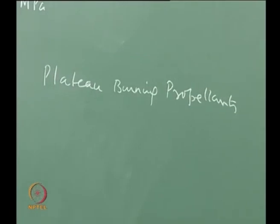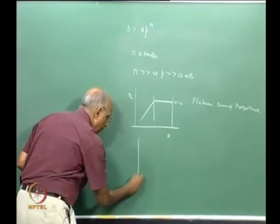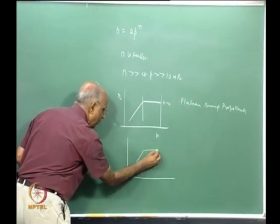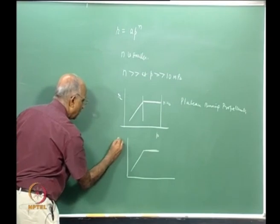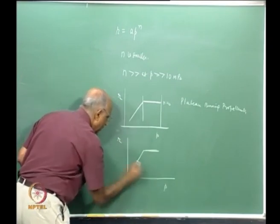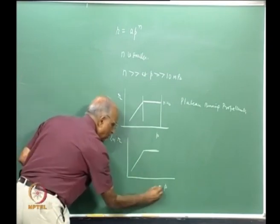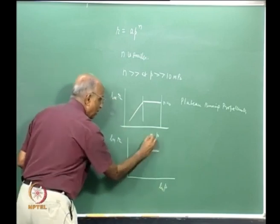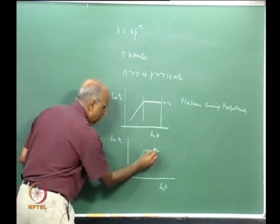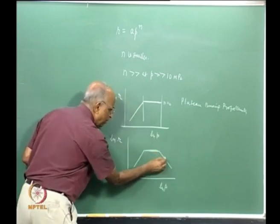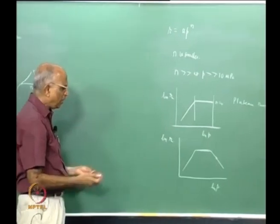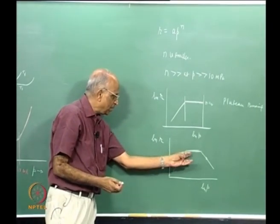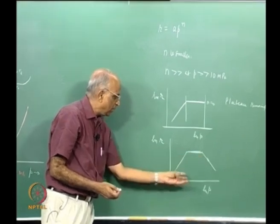Some propellants even show a slight drop in burning rate at higher pressures after the plateau — meaning n becomes negative in that pressure range. Such propellants are known as mesa burning propellants. Whether plateau or mesa behavior occurs depends on the chemical composition of the propellant.